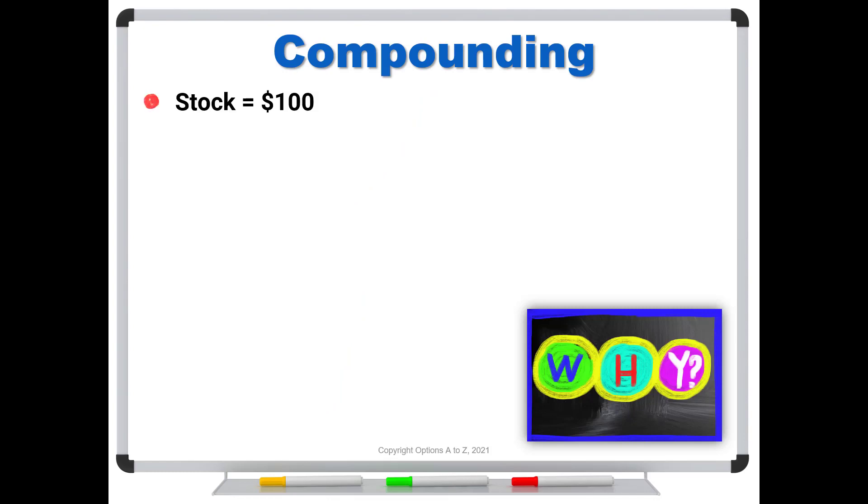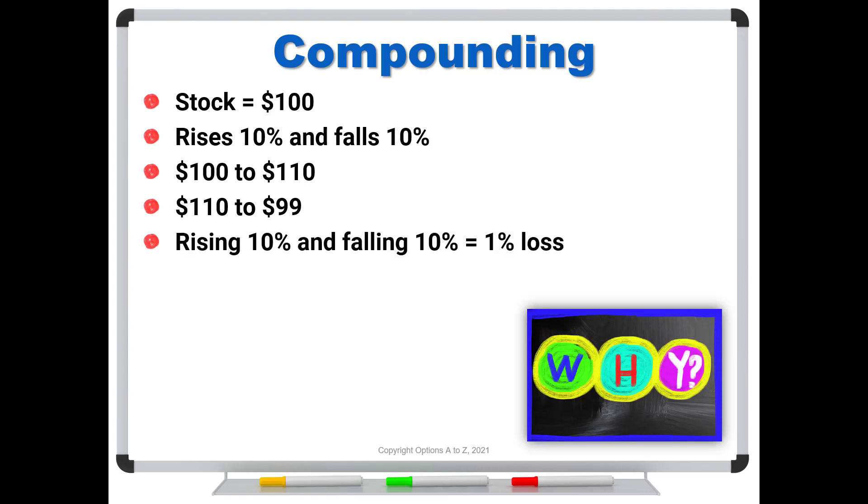So let's say that we have a stock price trading at 100 and it rises 10% one day and then falls 10% the next day. A lot of traders would think, well, that means you're back to zero. And you're not. When it goes from 100 and up 10%, that would take it to 110. But now it's trading for 110. And so if it falls 10%, that's a bigger number. We're taking 10% of 110. And that means it's going to fall from 110 down to 99. So think about that.